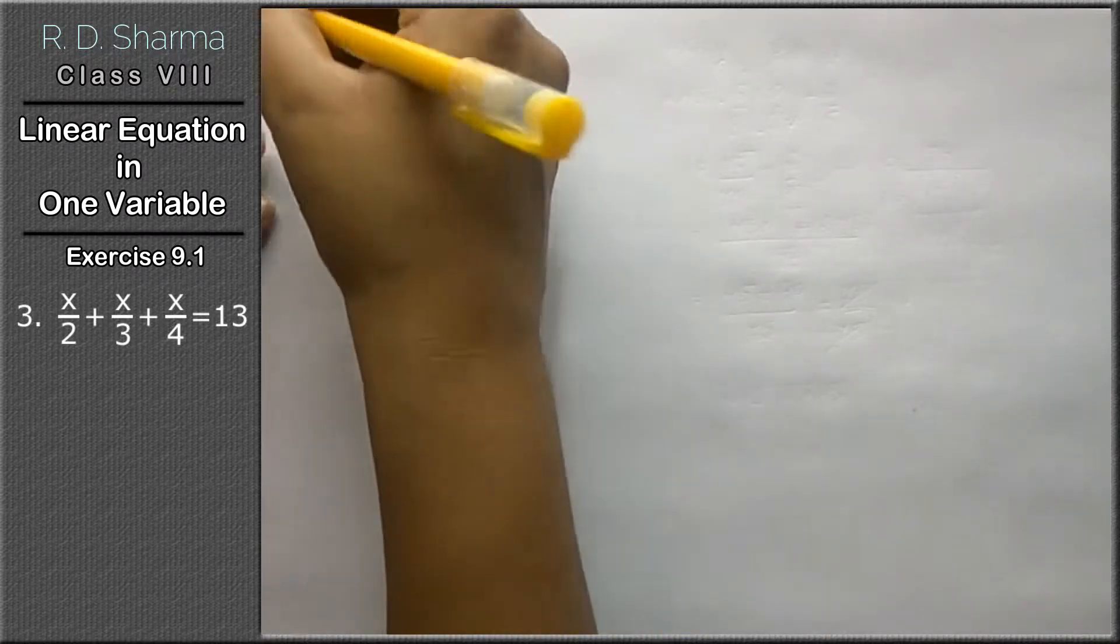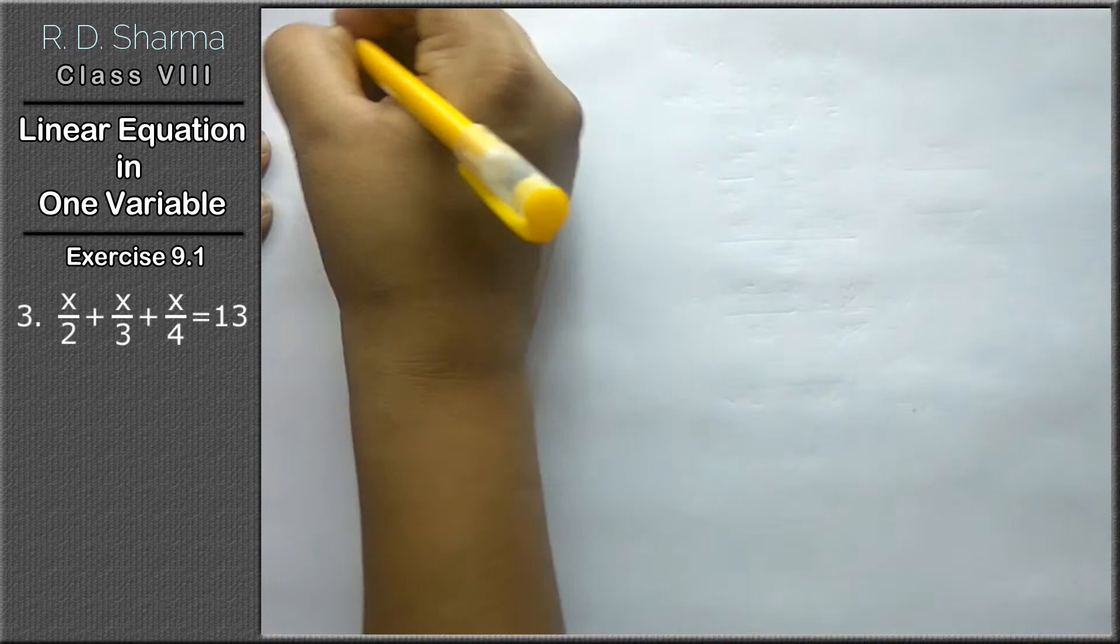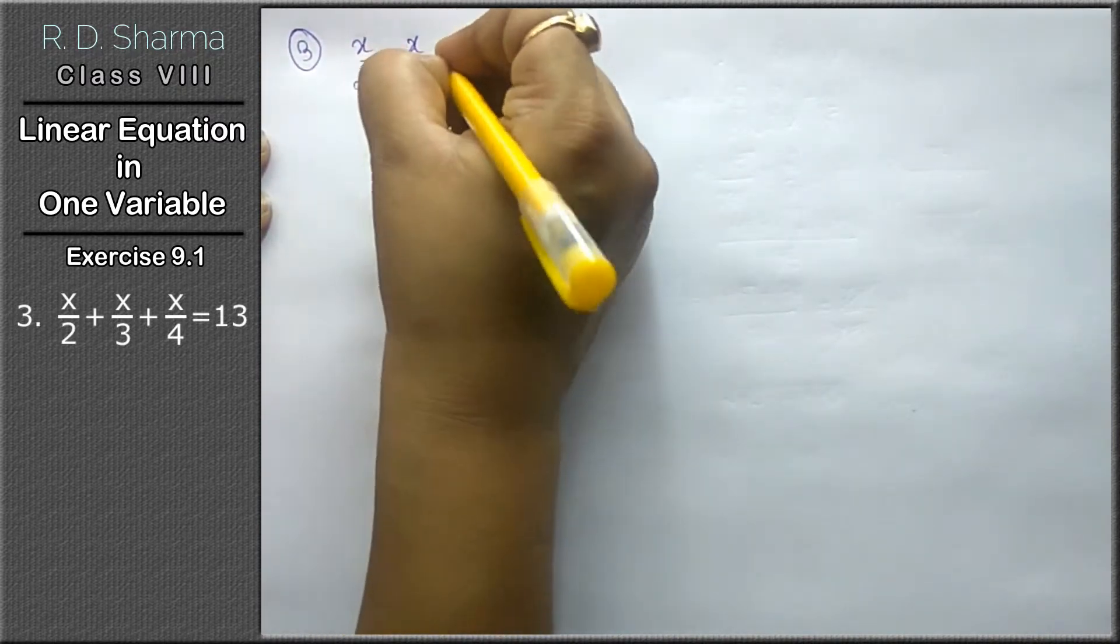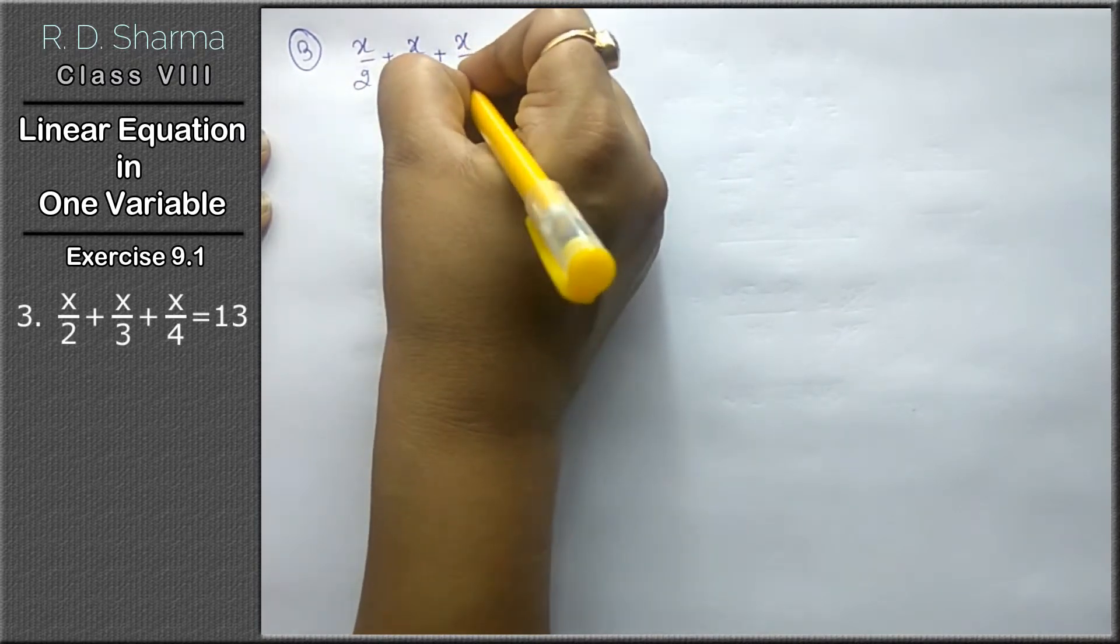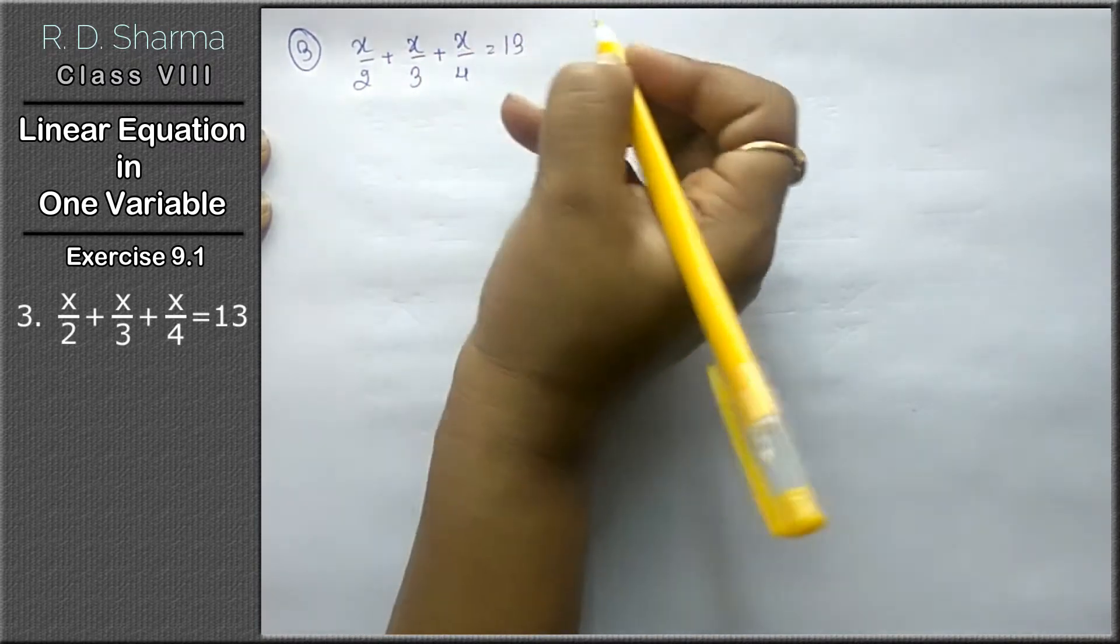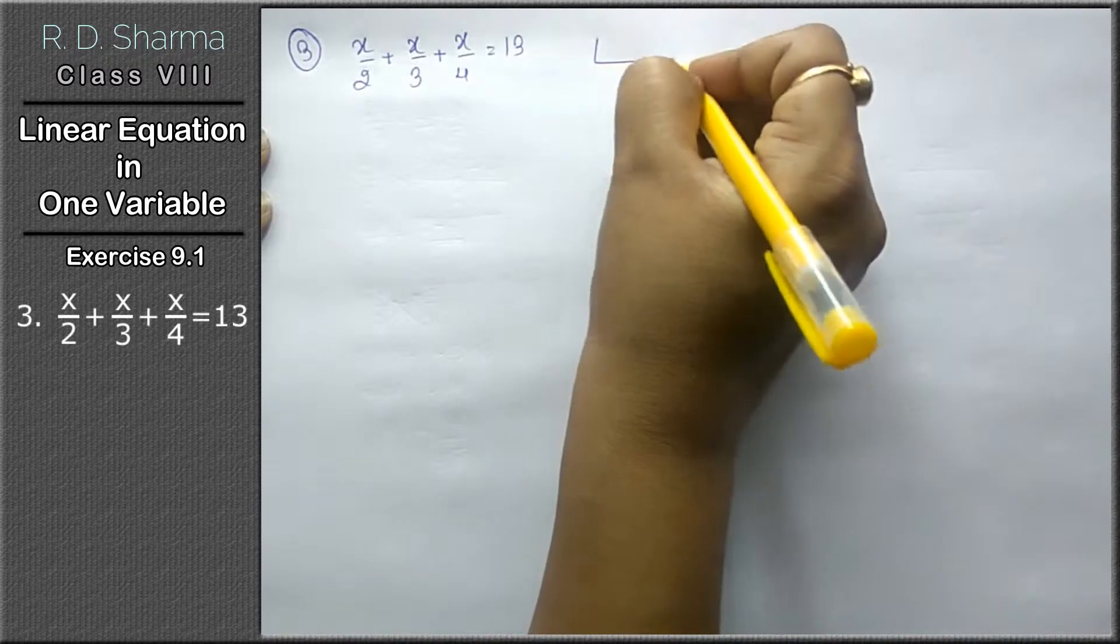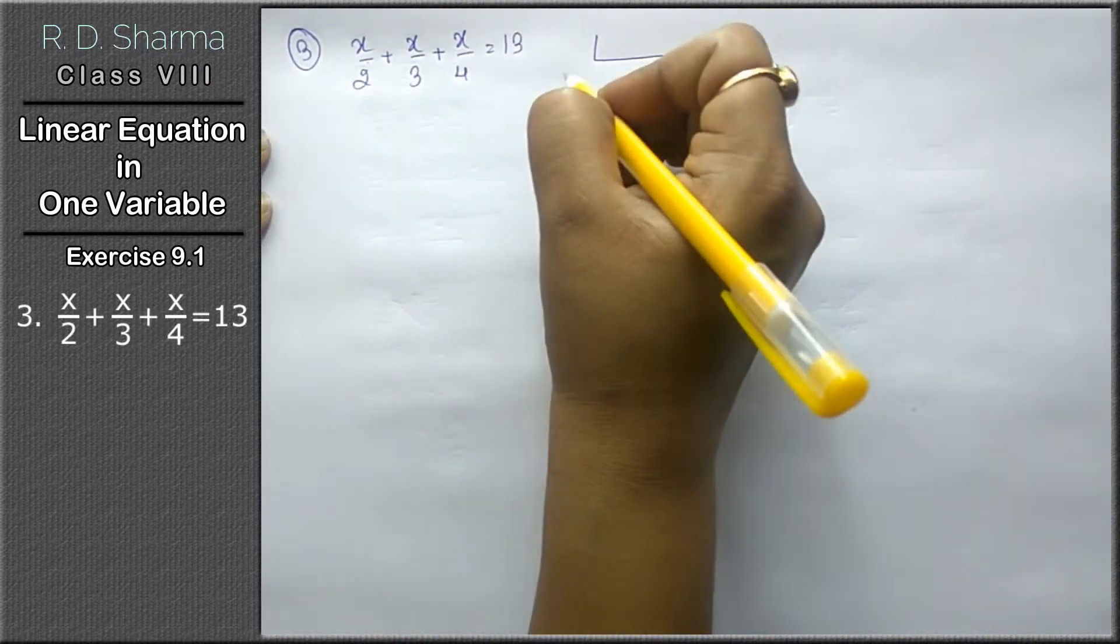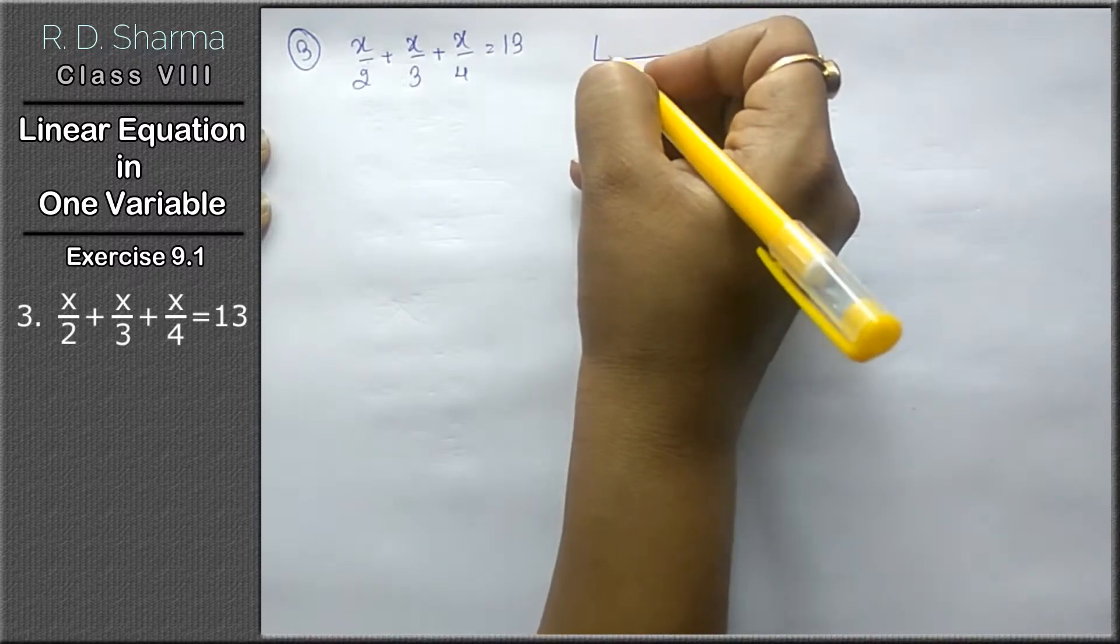Question number 3 is x upon 2 plus x upon 3 plus x upon 4 equals to 13. Now we have to take the LCM because x terms are all on one side, so we don't have to shift anything left to right side.